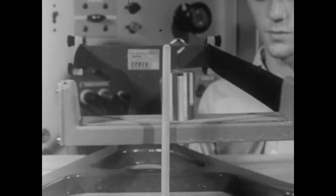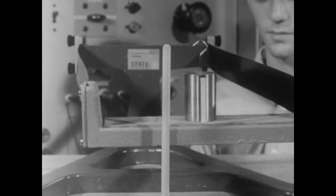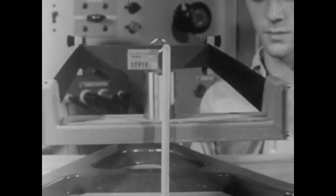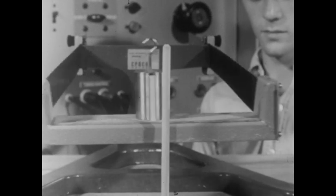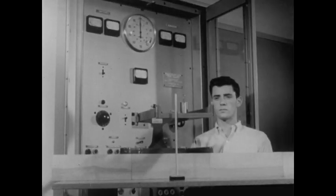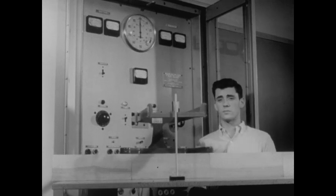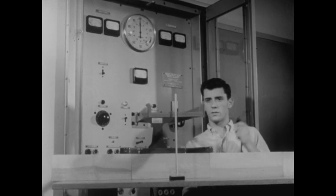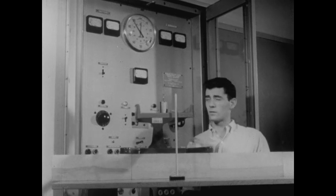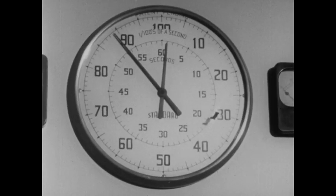We'll measure the interval of time it takes for the mass to swing past the vertical rod and then back again. We'll start the clock when the mass is exactly opposite the rod and stop it when it returns. The clock indicates the interval to the nearest hundredth of a second.